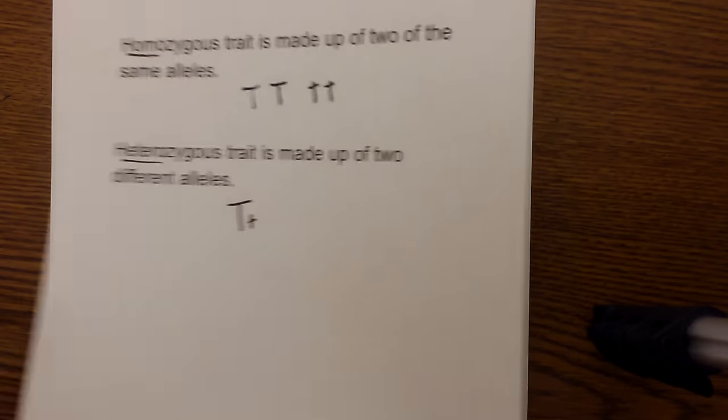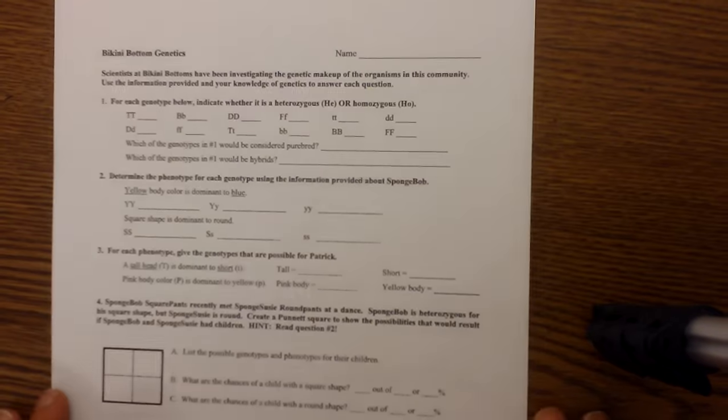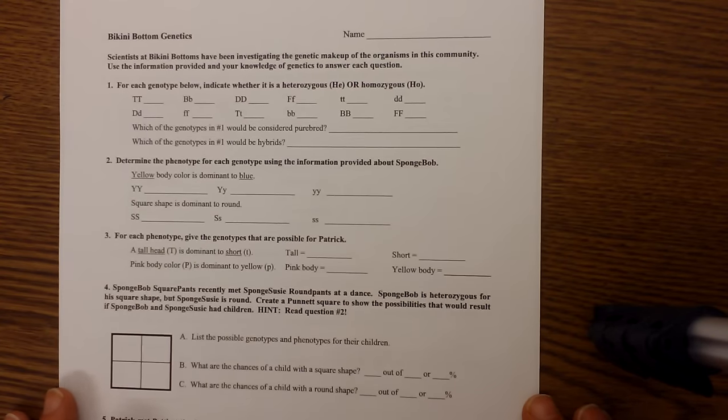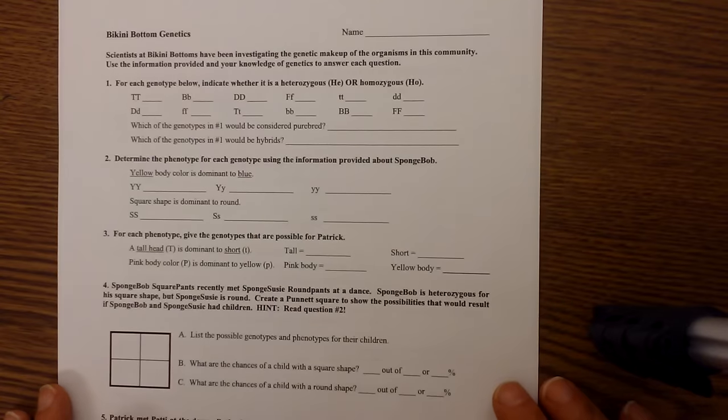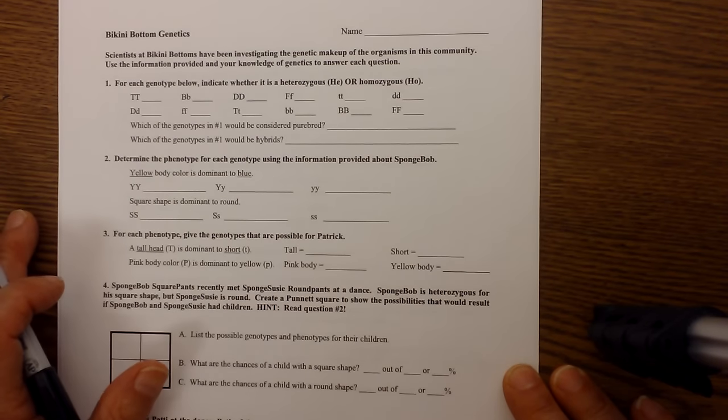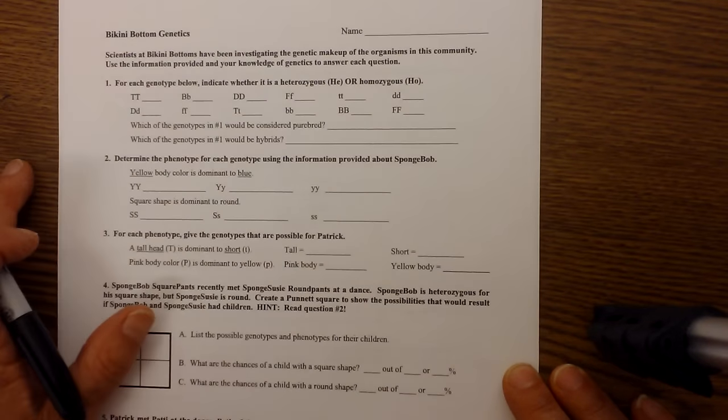So I've got a couple of worksheets and I'll leave a link to these. You can find these on Science Spot and I think they're really good practice for helping you recognize the difference between homozygous and heterozygous. And in this first one all you do is recognize the heterozygous and homozygous. So I'm going to go through several of them.